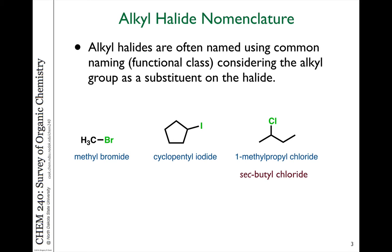In naming alkanes that contain halogen compounds, we need to keep in mind that there are some common naming systems prevalent in organic chemistry. For example, methyl bromide is not the official IUPAC name, because it considers bromide as the parent molecule with methyl as a substituent — hence the -yl ending. Similarly, cyclopentyl iodide and secondary butyl chloride are ways to describe halogen compounds using more inorganic-type nomenclature that treats the halogen somewhat like a salt.